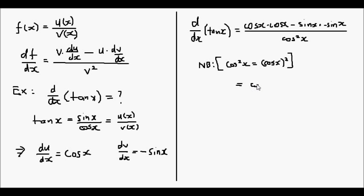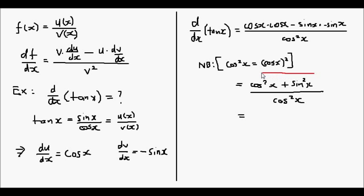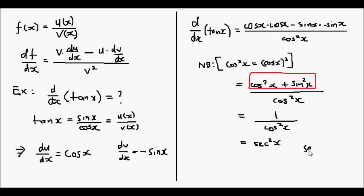Tidying up a little bit, we get cos squared(x) plus sin squared(x) — since negative times negative equals a positive — divided by cos squared(x). An important trigonometric identity to remember is that cos squared(x) plus sin squared(x) equals 1. So we end up with 1 divided by cos squared(x), and this is equal to sec squared(x), because sec(x) is defined as 1 divided by cos(x).